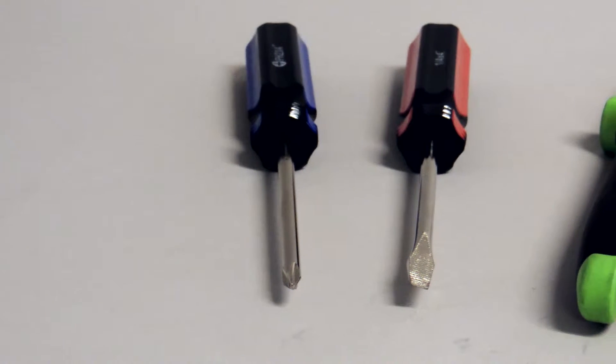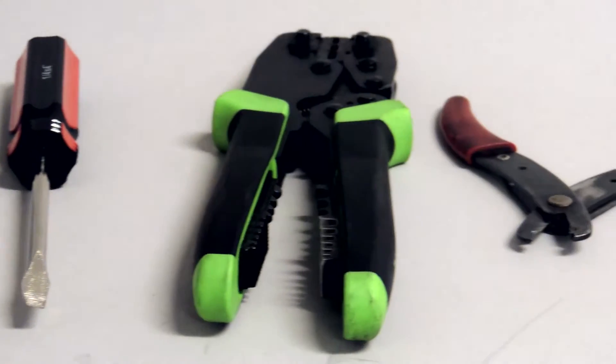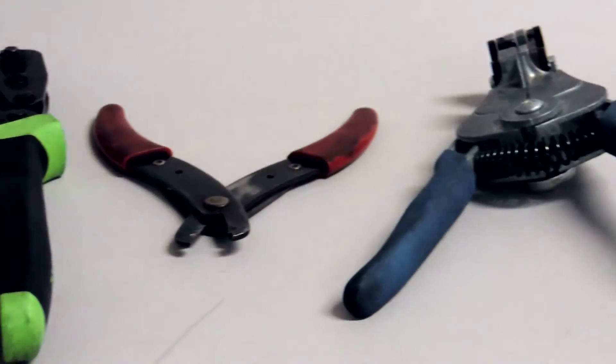To wire the ball valve, you will need both a Phillips and a standard screwdriver, crimpers, wire cutters, and wire strippers.